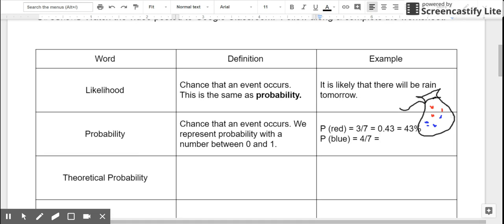As a decimal, 4 sevenths is about 0.57 or about 57%. So all of these ways would be how I could represent the probability: 3 sevenths, 43% or 0.43 for the red marbles, and 4 sevenths, 0.57 or 57% for the blue marbles.